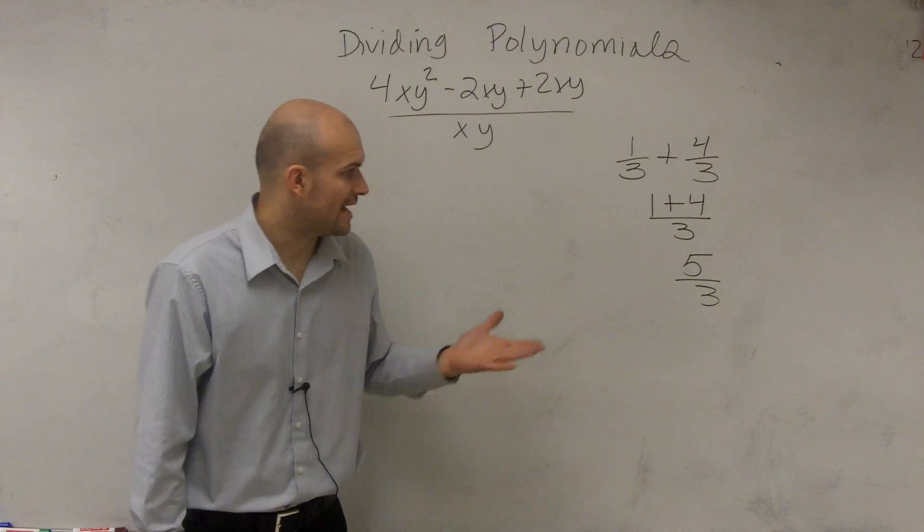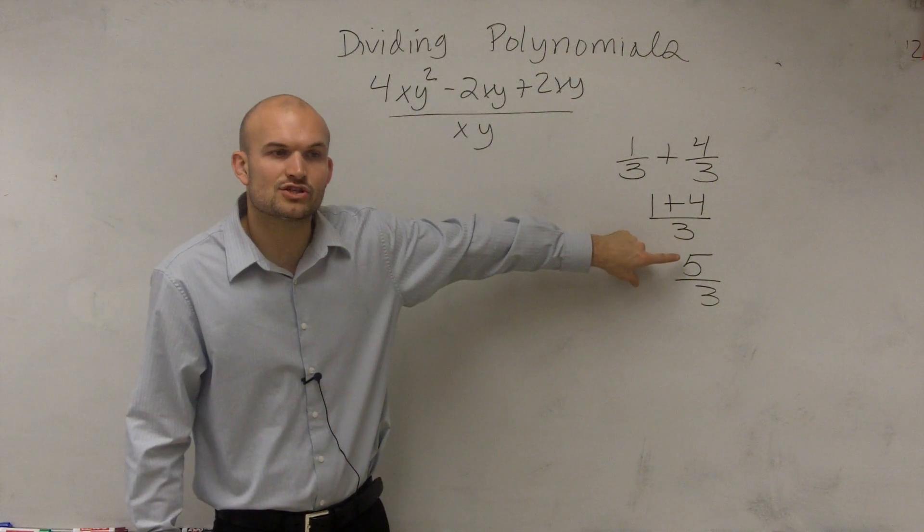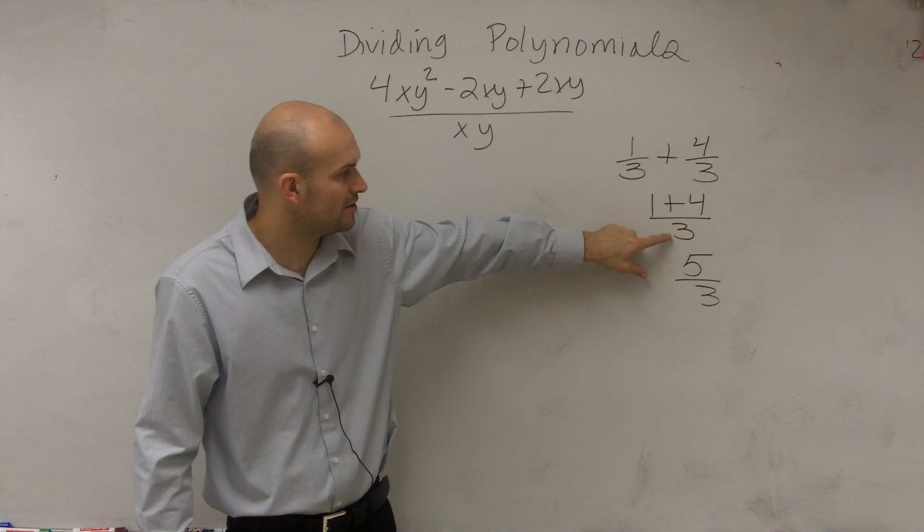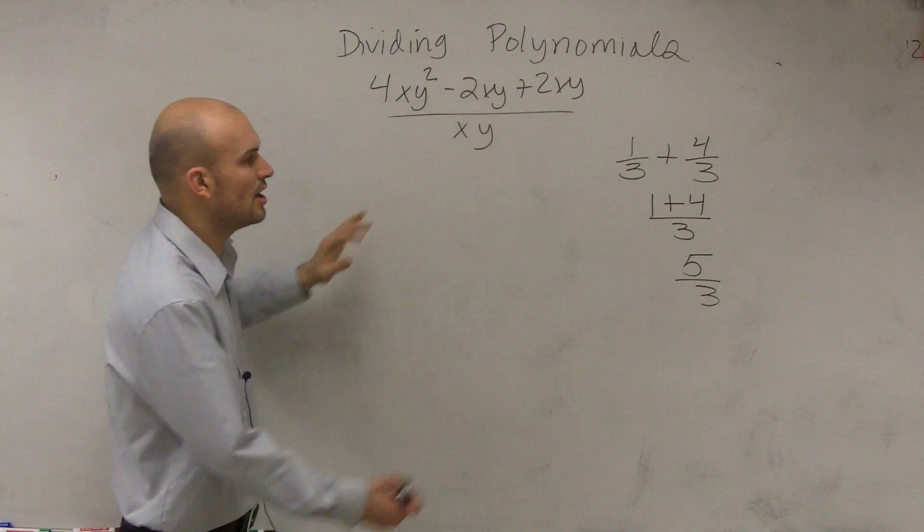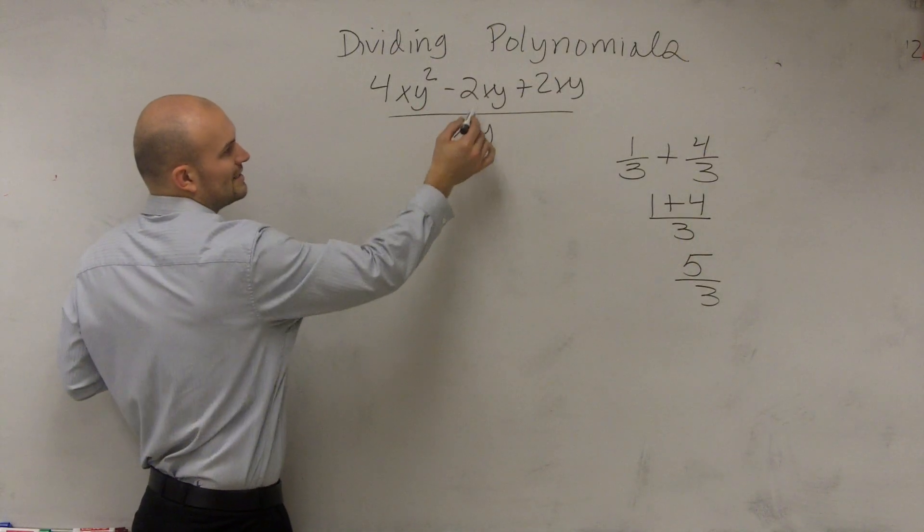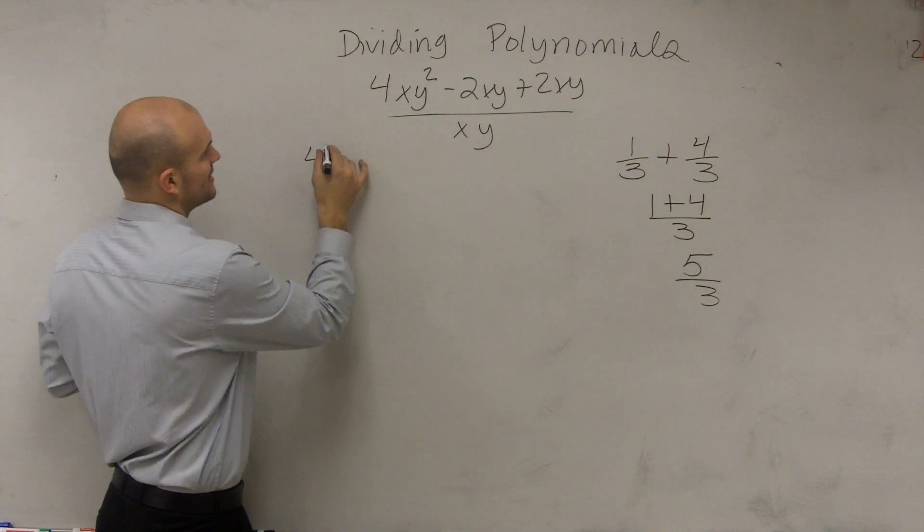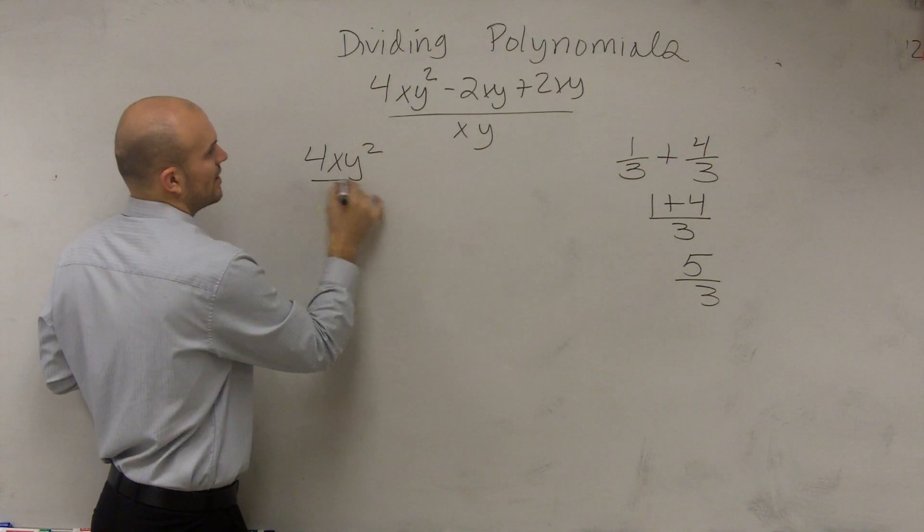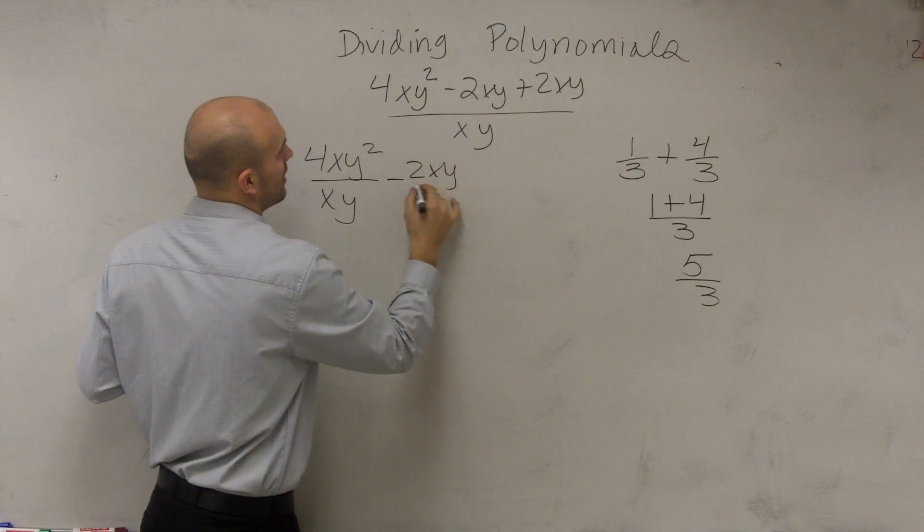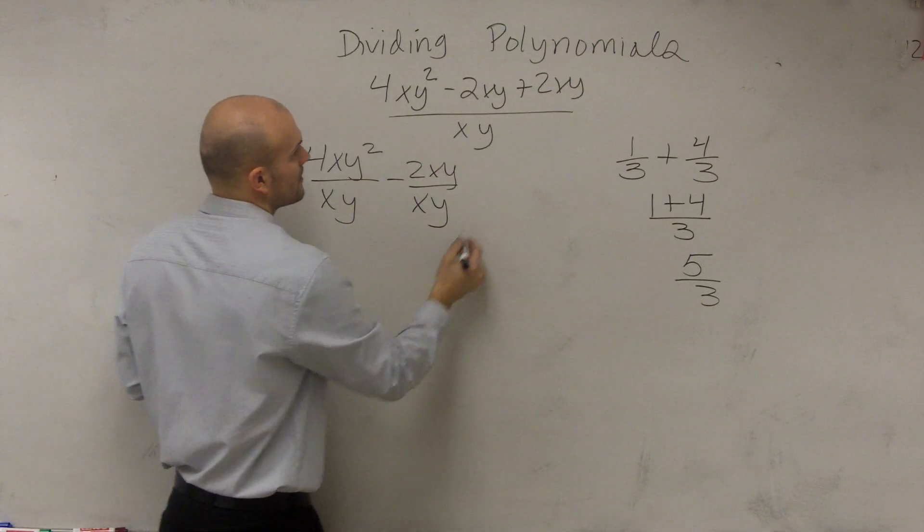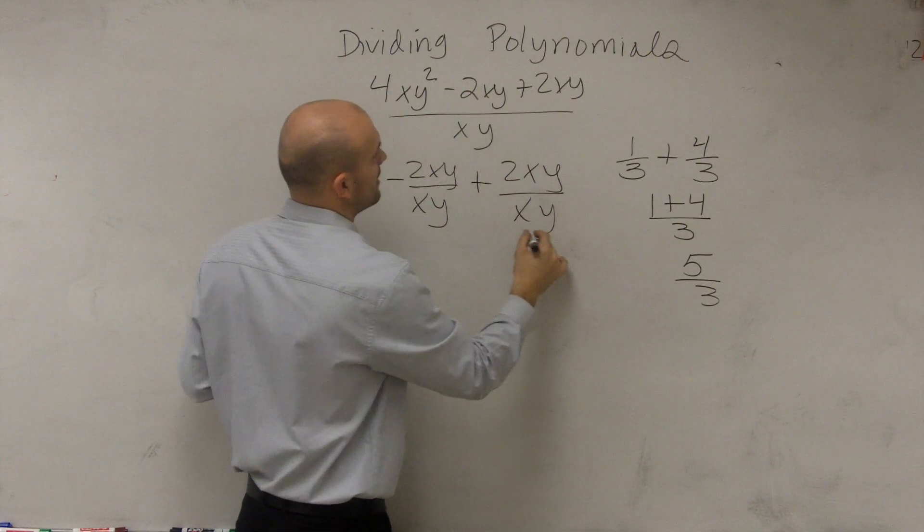So what I'm trying to tell you guys is right now, we have a problem that's written in this format. What I want to show you is let's write the problem in this format. So what I'm going to do is I'm going to break this apart into every single one of these terms, terms being divided by my divisor. So therefore, I can write this as 4xy² divided by xy minus 2xy divided by xy plus 2xy divided by xy.